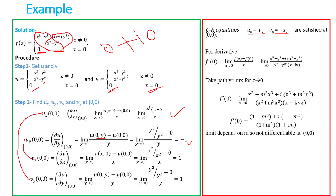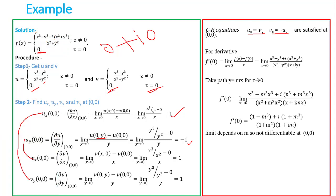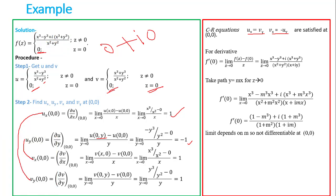Now the second part: how to find the derivative. For the derivative, F'(0) is equal to the limit as z tends to 0 of [F(z) − F(0)] / z. Now F(z) is the full expression, so we write [F(z) − F(0)] / z, which gives (x³ − y³) over (x² + y²), all divided by z, where z = x + iy.